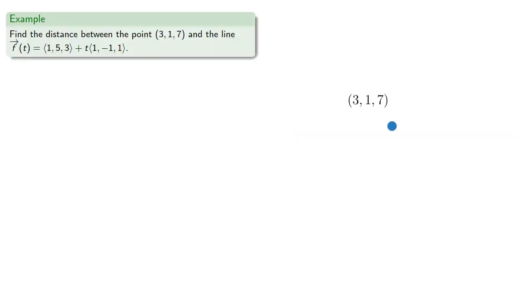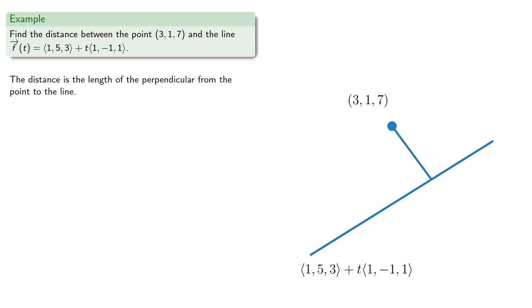So let's find the distance between a point and a line given in vector form. Now the distance is the length of the perpendicular from the point to the line. If we make this one side of a right triangle, the hypotenuse will run from the point to some point on the line.